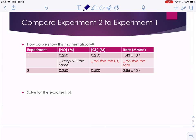So how are we going to show this mathematically, that when we doubled the chlorine, we ended up doubling the rate? What we're going to do is compare experiment 2 versus experiment 1.